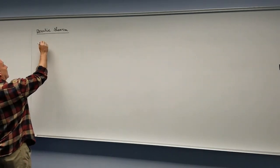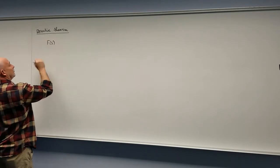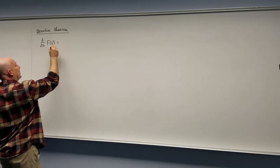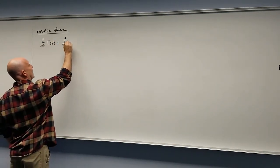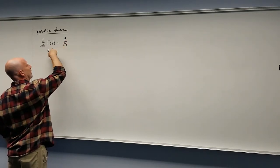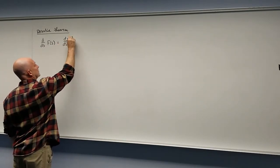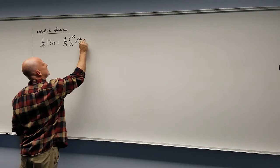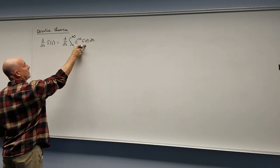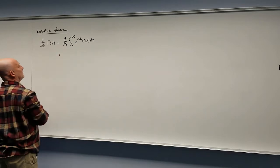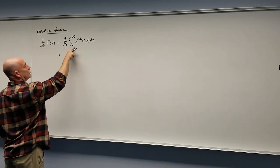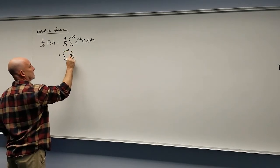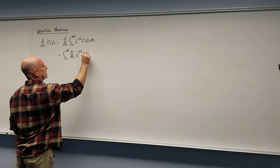So if I have some big F of S — we've already done a Laplace transform of it — what happens if I take the derivative with respect to S of that? Well, that's saying: what's the derivative with respect to S of the Laplace transform of f(t)? So this is really the integral from zero to infinity of e to the negative ST, times f(t), dt — because that's by definition what big F(S) is.